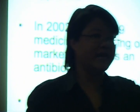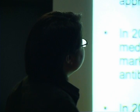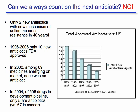We're losing. Remember that timeline — we develop an antibiotic, get resistance, the next antibiotic appears, resistance follows. Can we always count on the next antibiotic being there? The answer is no. There are only two antibiotics with new mechanisms of action developed in the last 40 years. From 1998 to 2008, only 10 new antibiotics were FDA-approved, and the majority are simply derivatives of old drugs demonstrating cross-resistance. In 2004, of 506 drugs in the developmental pipeline, only five are antibiotics — compared to 67 in cancer.